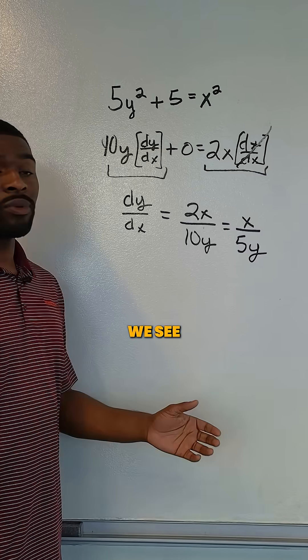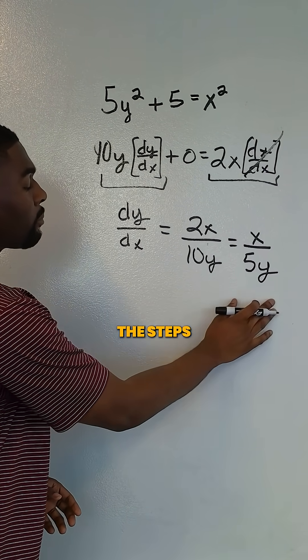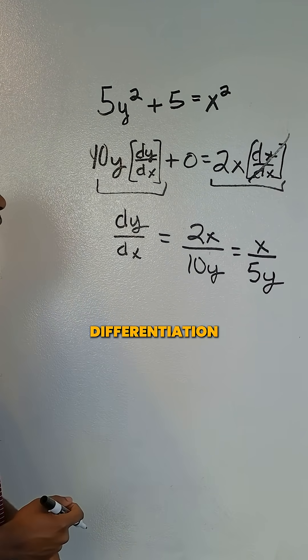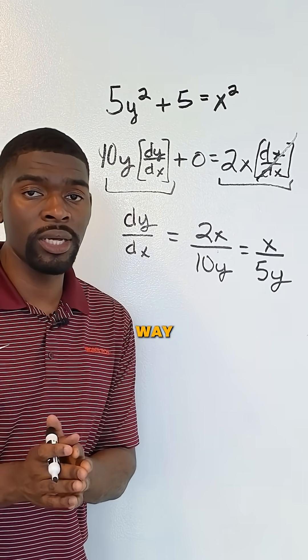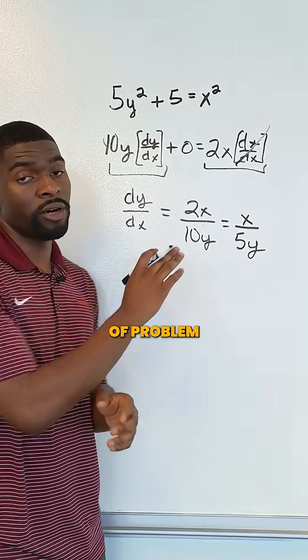We can simplify, and now we see this is the steps for solving an implicit differentiation. We didn't have to isolate y by itself, and this is by far the simplest way to approach this type of problem.